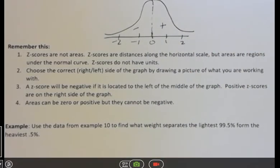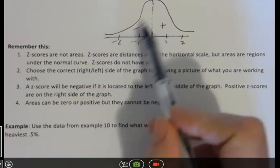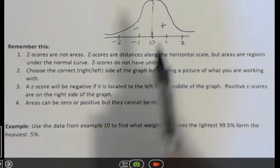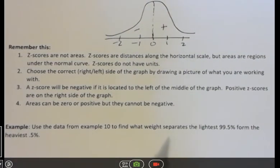Z score would be zero in the middle and negative on this side and positive on that side. Areas cannot be negative. Area is, the area under the curve is between zero and one, right? It can never have negative.